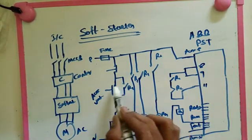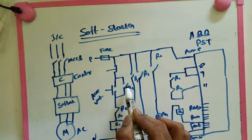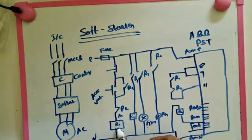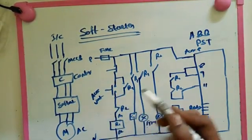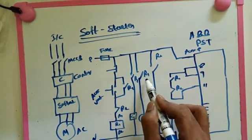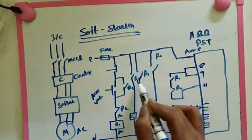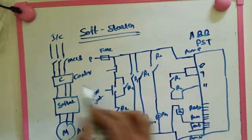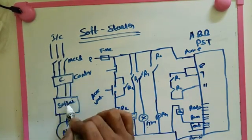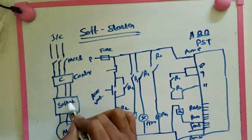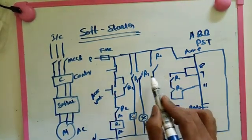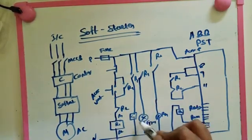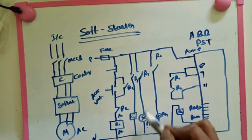After that we got R1 is energized. Then R1 NO is closed. R1 NO is closed, that's why we got R1 always energized. At this time, the three R1 coils are energized and closed. This one is closed, the C1 contactor is energized, giving supply to soft starter. After that giving supply to motor. Here, another one R1 is closed, at that time the green lamp is glowed for running symbol.